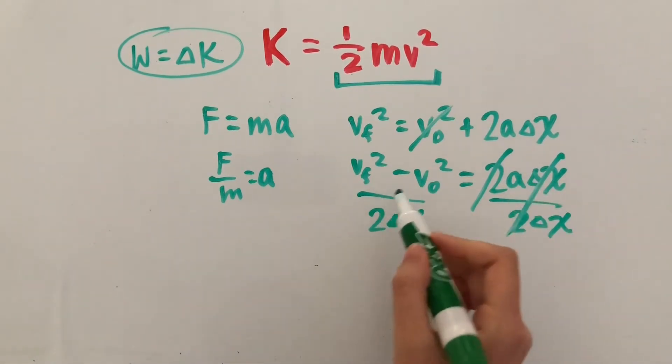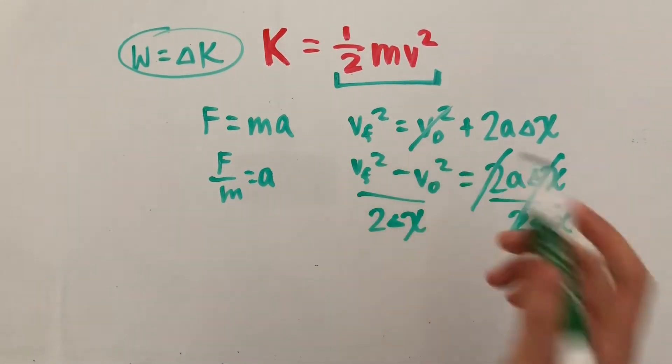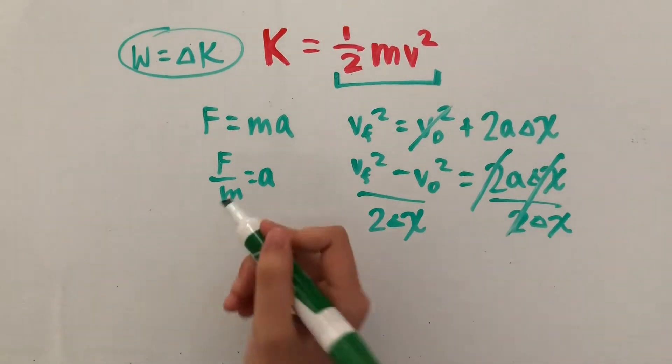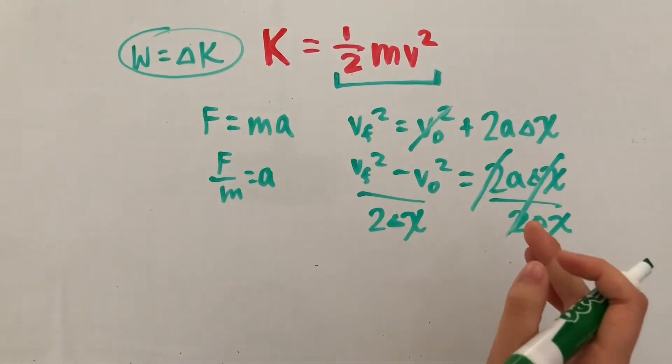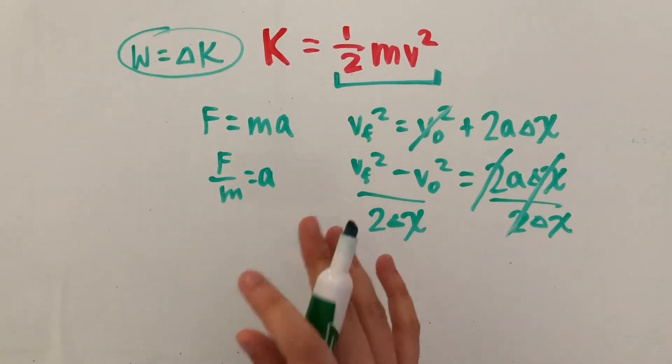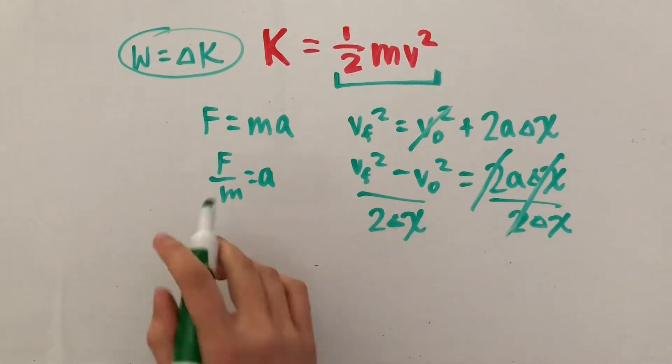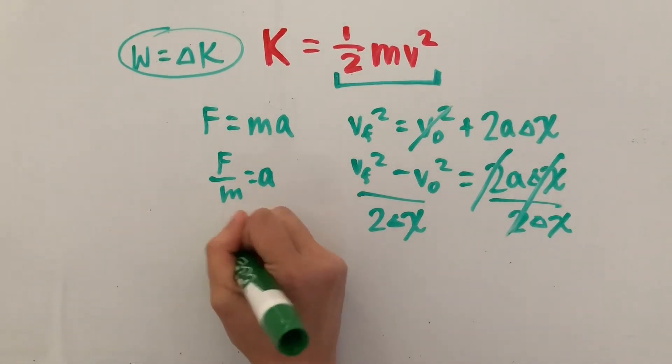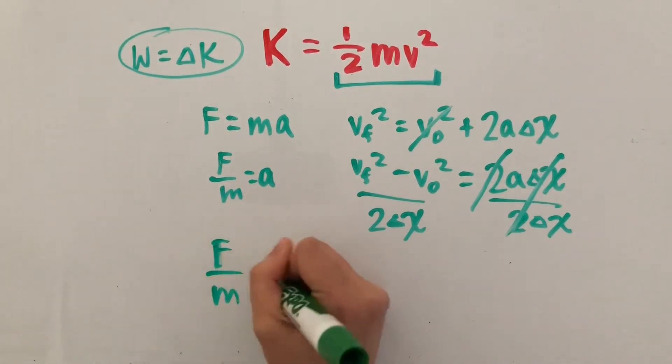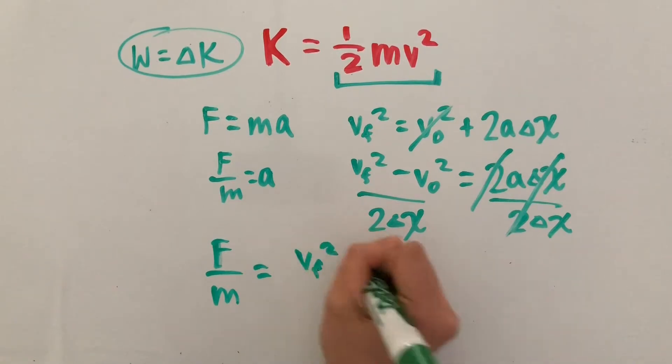And now we have acceleration is equal to all of this. So since we have one thing equal to acceleration and another thing equal to acceleration, since both of them equal acceleration, then both of them should be equal to each other. So force over mass is equal to final velocity squared minus initial velocity squared over 2 times the displacement of an object.